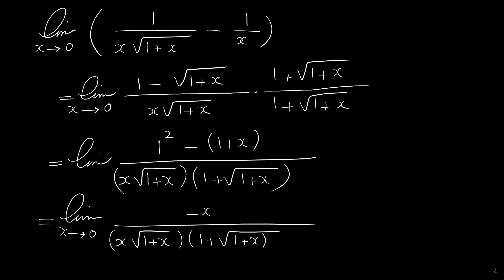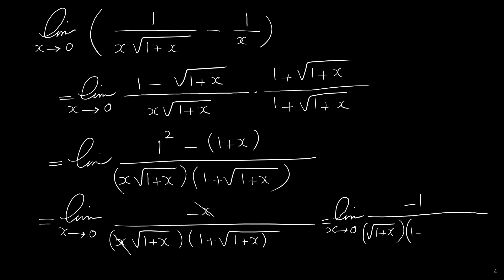So we have, as x approaches 0, negative x over x radical 1 plus x times 1 plus radical 1 plus x. Cancelling x from the top and bottom we have the limit as x approaches 0 of negative 1 over radical 1 plus x times 1 plus radical 1 plus x. Plugging in 0: radical 1 plus 0 is 1, so the first bracket is 1 and the second bracket is 1 plus radical 1, which is 2. So the denominator is 2 and the limit is negative 1 over 2.